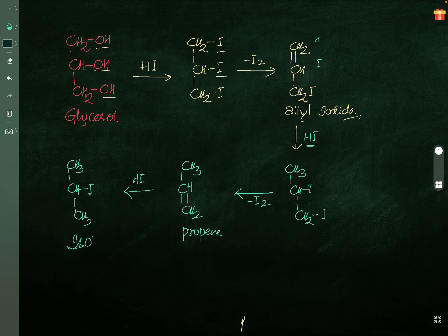So if you are using excess HI, you finally get isopropyl iodide from glycerol. If you use a small amount, the reaction stops at allyl iodide. If you use excess, the reaction goes all the way to isopropyl iodide. Generally, this question will be asked to you. Thank you.